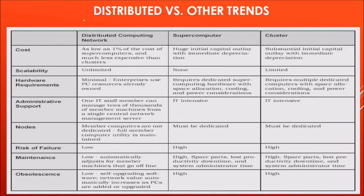Distributed computing is a cousin of cluster computing and grid computing. Regarding cost, distributed computing is as low as one percent of the cost of a supercomputer, and much less expensive than clusters. A supercomputer involves huge initial capital outlay with immediate depreciation; cluster computing also has substantial initial capital outlay. Scalability in distributed computing is unlimited — you can add or remove as many systems as you want.